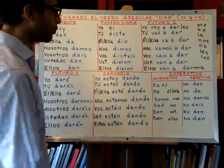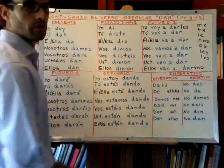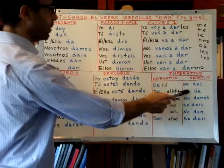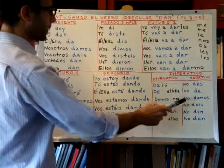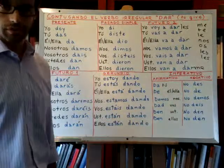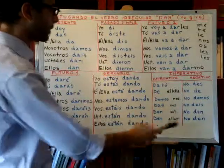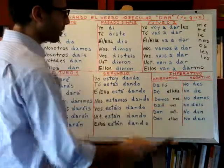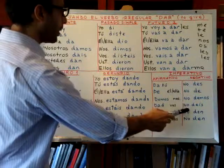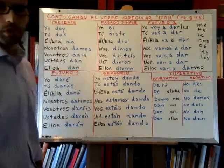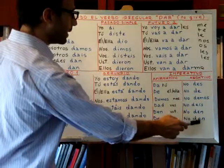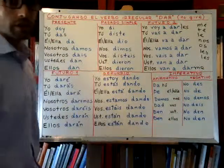The negative would be: no des — you don't give; no de — for him or her; no demos — let's not give; no deis — you don't give, you plural; no den — again, you plural, don't give; and no den — for they, don't give.